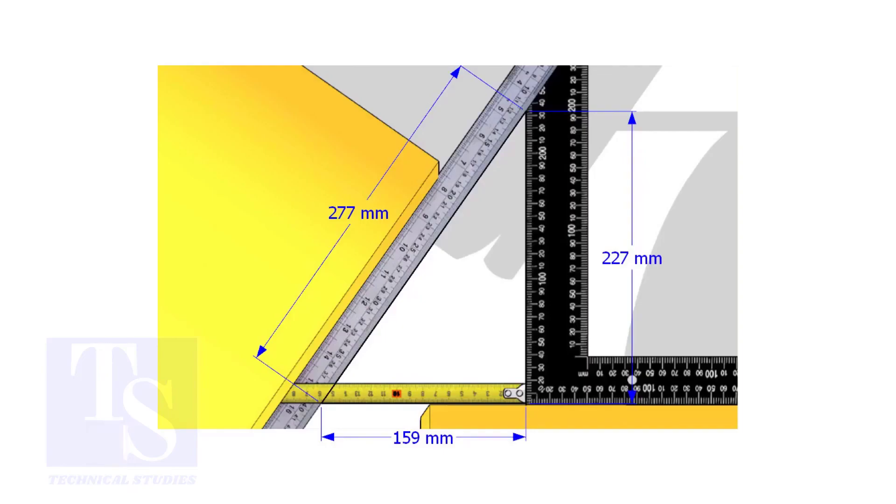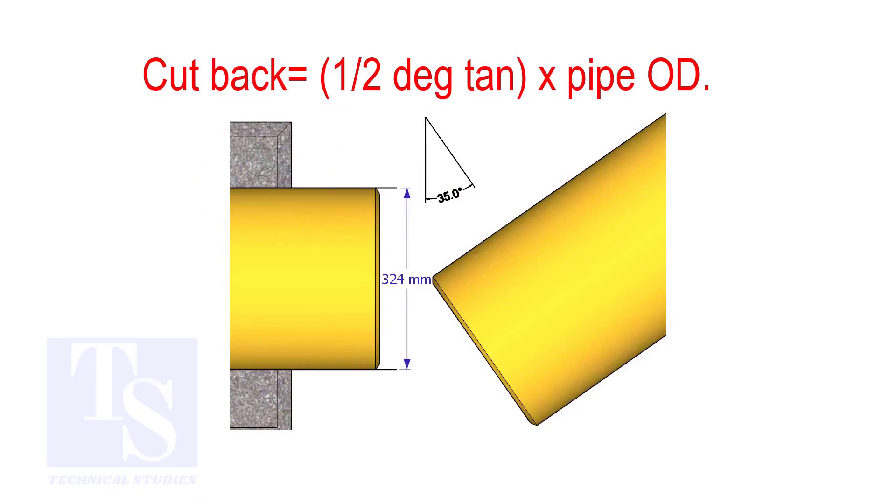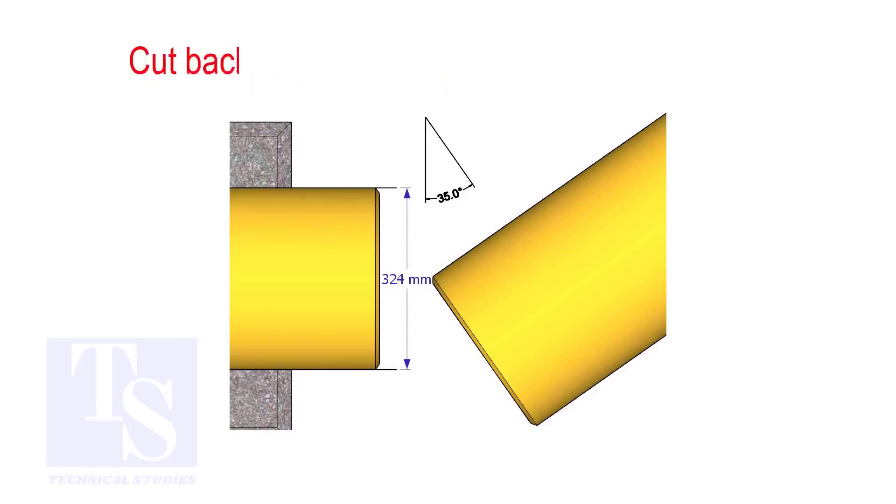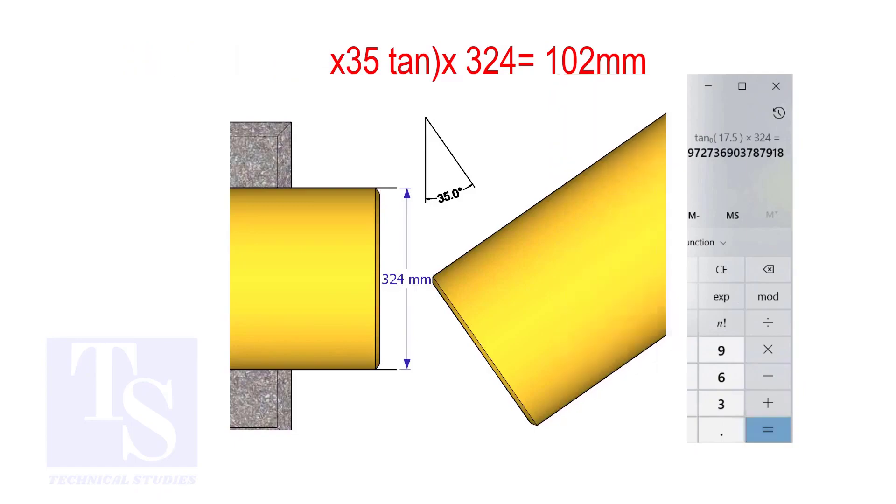How to calculate the cutback of a single cut miter. When it is a single cut, the cutback is half degree tan multiplied by the OD of the pipe. The answer is 102 millimeters, or 5 inches.